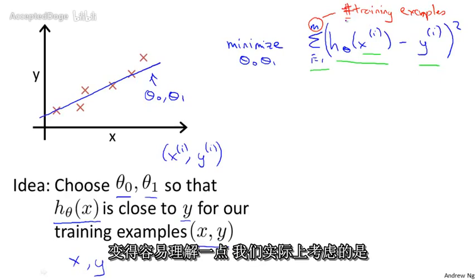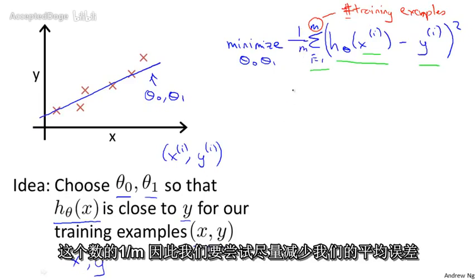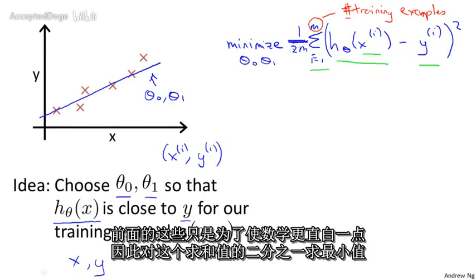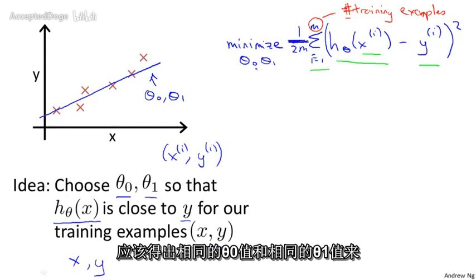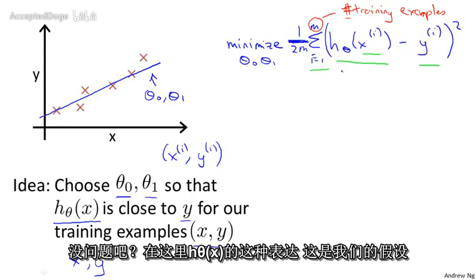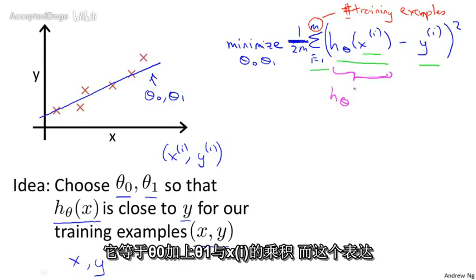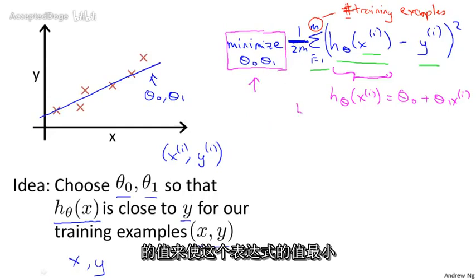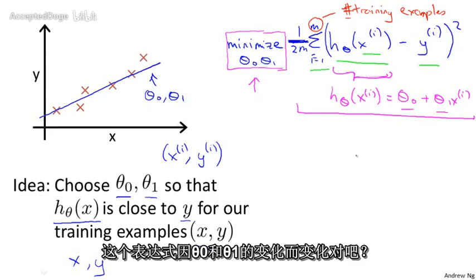And to make some of our later math a little bit easier, I'm going to actually look at 1 over m times that. So we're going to try to minimize my average—we're going to minimize 1 over 2m. Putting the constant 1 half in front just makes some of the math a little bit easier. So minimizing 1 half of something should give you the same values of the parameters θ₀ and θ₁ as minimizing that function. And just make sure this equation is clear. This expression in here, h subscript θ of x, this is our usual, that's equal to θ₀ plus θ₁xⁱ. And this notation, minimize over θ₀ and θ₁, this means find me the values of θ₀ and θ₁ that causes this expression to be minimized. And this expression depends on θ₀ and θ₁.